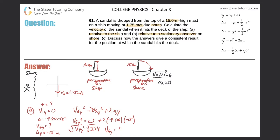Whenever you take the square root, remember it's always plus and minus. So the square root of 294 is going to be 17.1 meters per second. Now, which value should it be — plus or minus? Think about the direction in which the sandal is traveling: traveling down, negative Y direction. Therefore, we choose the negative answer. So the final velocity in the Y is negative 17.1 meters per second.